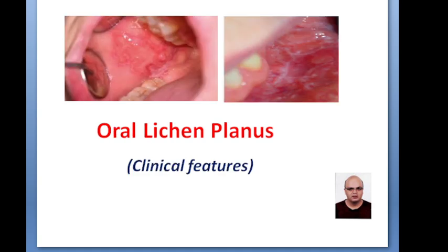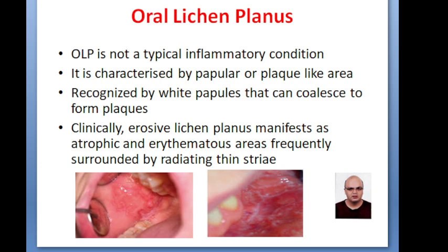Clinical features of Oral Lichen Planus. Oral Lichen Planus is not a typical inflammatory condition. It is characterized by papular or plaque-like areas, recognized by white papules that can coalesce into plaques. Erosive Lichen Planus manifests as atrophic and erythematous areas.